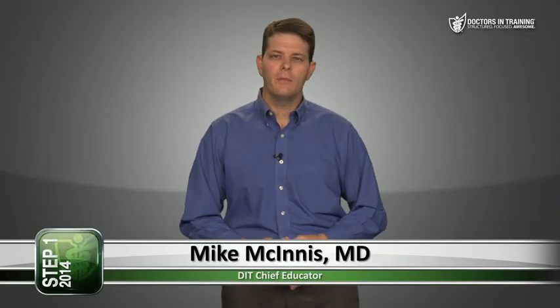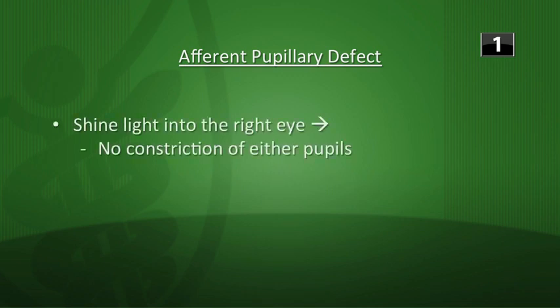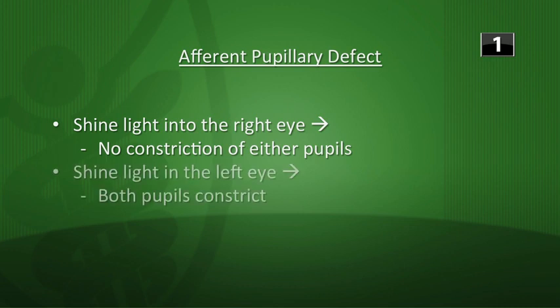Let's get warmed up for biochem 14. First question: describe what light reflexes will be seen in both eyes if the right optic nerve is damaged prior to the pre-tectal nucleus. This is also known as an afferent pupillary defect. When you shine light into the right eye, there's no constriction of either the left or right pupil, but when you shine light into the left eye, both pupils constrict.